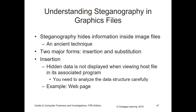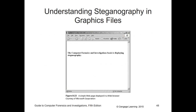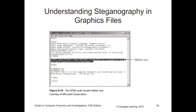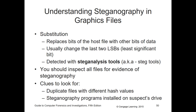Steganography is the ability to hide information inside of an image file. There are two major forms: insertion, which hides data not displayed when viewing the host file (like hidden text in a web page's code), and substitution, which replaces bits of the file with other bits of data — usually changing the least significant bits. Detecting steganography is harder, but tools exist. Clues include looking for duplicate files with different hash values, since bit changes will modify those hash values.